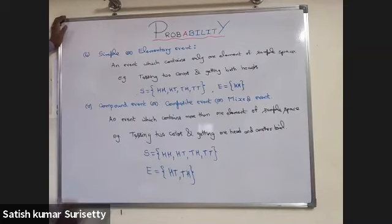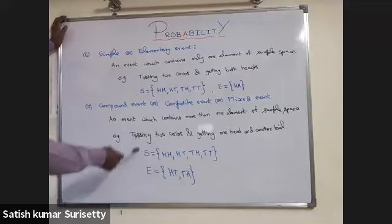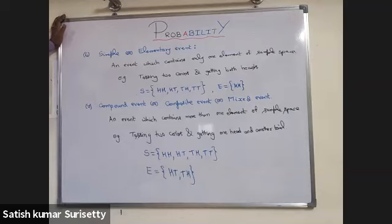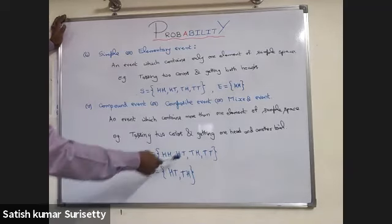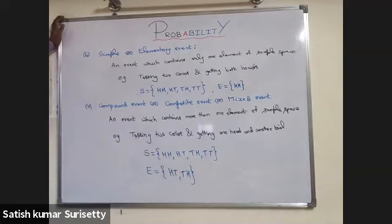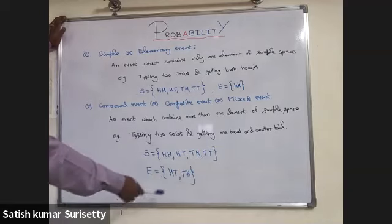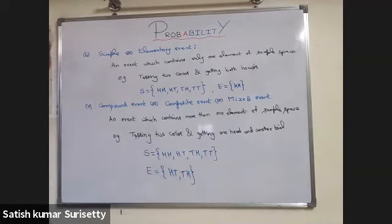A compound event, also called a composite or mixed event, is an event which contains more than one element of the sample space. For example, tossing two coins and getting one head and one tail. From the sample space {HH, HT, TH, TT}, the event is {HT, TH}, which contains two elements.